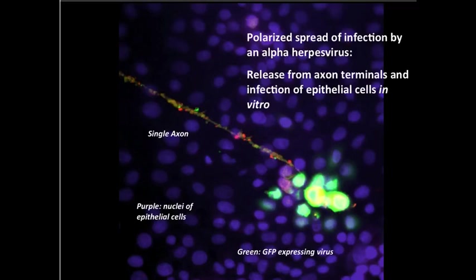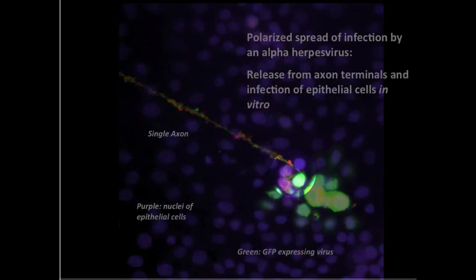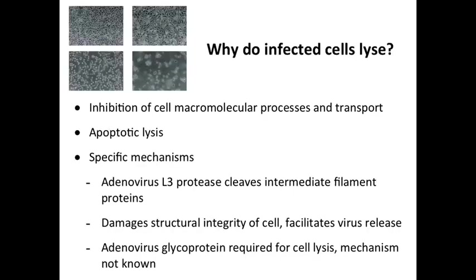Some viruses will bud from or be released from beneath the cells, and this is very important for pathogenesis. Where a virus is released controls the kind of disease it's going to cause. Here's an example of polarized release — an axon infected with herpes virus, where we can tell by fluorescent protein staining that the virus is being released at the axon terminus, infecting epithelial cells in a very specific directed manner.